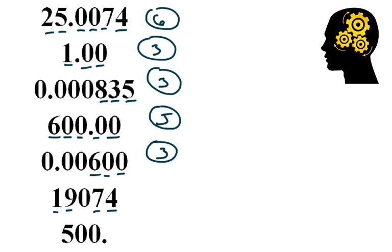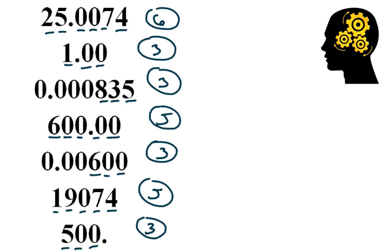All the non-zeros have to be significant, and that makes this a middle zero, so it is also significant. And this last one — the zeros are significant because they are at the end of the number with a decimal point. So that's a 3 significant figure number, and that's the idea.